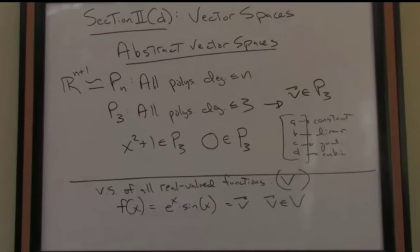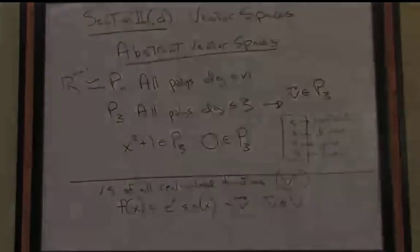For instance, what is the zero vector in this vector space of all real valued functions? That would just be the zero function, the constant zero function. Do we get closure if I add one real valued function to another? Do I still maintain the real valuedness? If you will, I do. It's still going to be a real valued function. Associativity, commutativity, and all those nice algebraic properties definitely hold here.